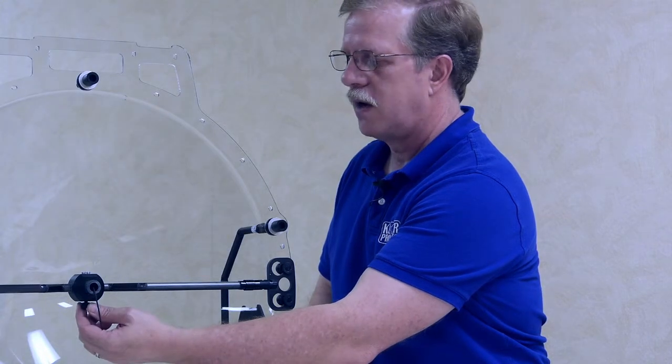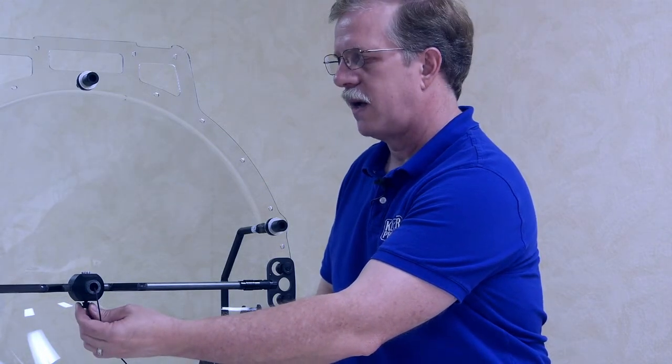That adjustment is made by loosening the thumb screw on the bottom of the center mic hub and then once it's in place tightening that back down.